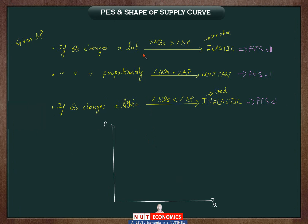Once you understand the economic meaning of price elasticity of supply and the maths behind it, the next thing you need to know is how to look at the shape of the supply curve graph. Just by its shape, you should be able to tell whether that product's supply is elastic, unitary elastic, or inelastic. There are going to be similarities between what we learned about the shape of the demand curve and how we can predict whether demand is elastic or inelastic, and what we will now learn about the shape of the supply curve.